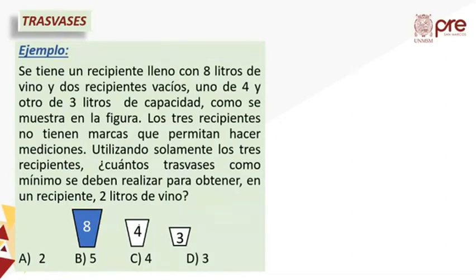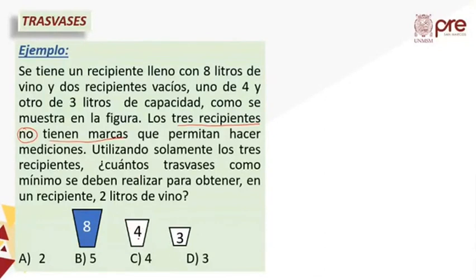Esos 3 se van a ir a la parte de arriba. La mínima cantidad de traslados en este caso va a ser igual a 3. Saldría la alternativa B. Esto es uno de los ejemplos de cuando uno va a trasladar fichas u otros objetos.